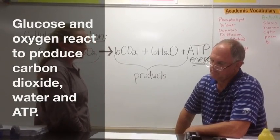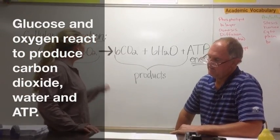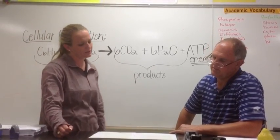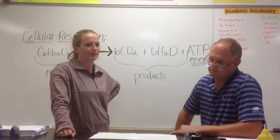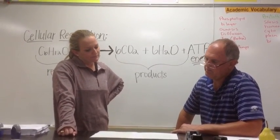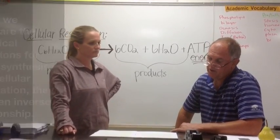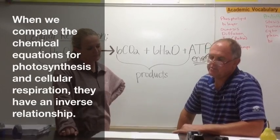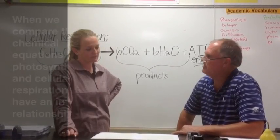The chemical equation for cellular respiration is C6H12O6 plus 6O2 yields 6CO2 plus 6H2O plus ATP. If I compare photosynthesis and cellular respiration by looking at their chemical equations, I can say that they almost have an inverse relationship. The reactants of photosynthesis are products of cellular respiration and vice versa.